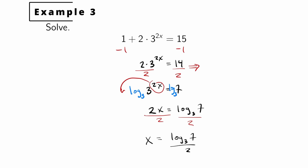Now, log base 3 of 7 — unless you have a graphing calculator — may not be directly computable. We can use the change of base formula and write this as one-half times log base 10 of 7 divided by log base 10 of 3, which any scientific calculator can handle. We won't go into the change of base formula in detail in this video.